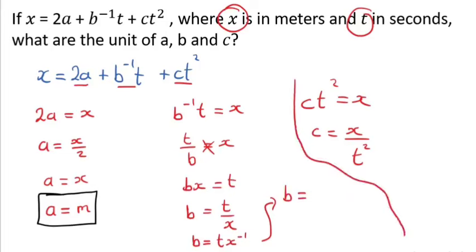Let me just bring it here with the space. So b has the units, t is a second, so second. Right, x is a meter, so meter to the power negative 1. So b equals second per meter. You can express them in any of the two. Any of the two is okay, so it's second per meter.